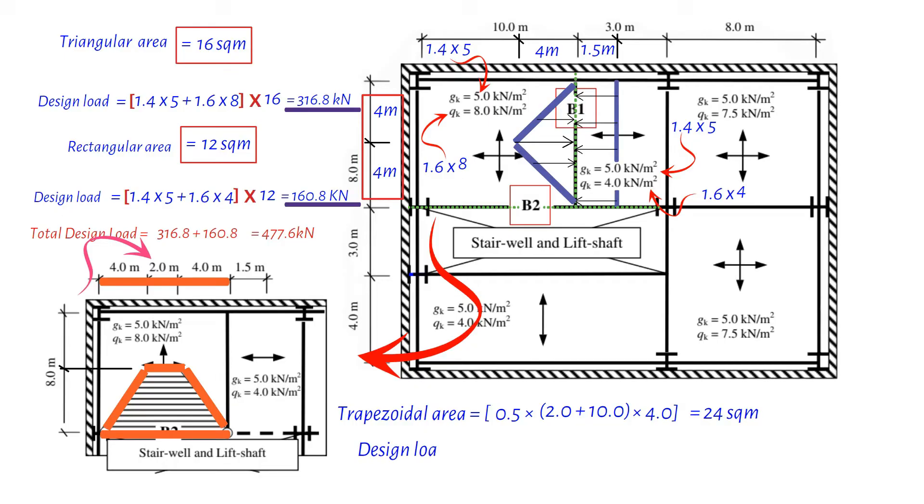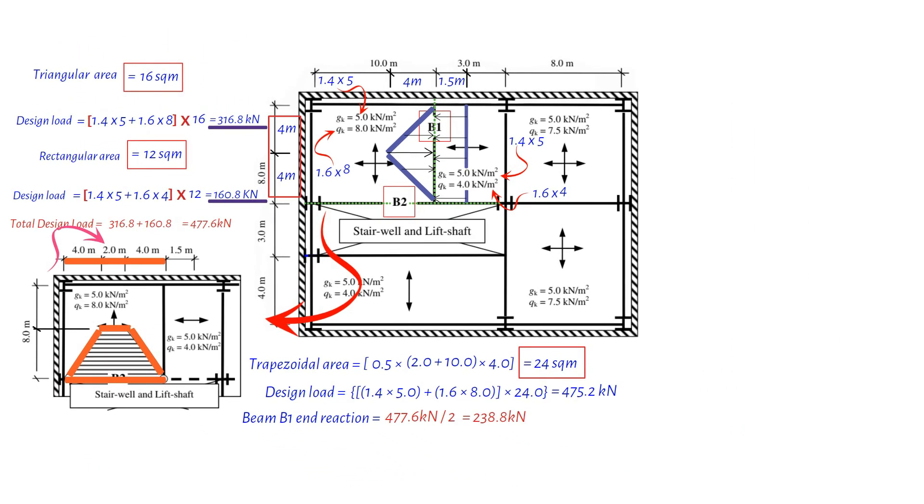Now for the weight part. Just like with beam B1, we multiply this area by 1.4 times the dead load plus 1.6 times the live load. After doing the math, we find out that beam B2 can support a weight of 475.2 kilonewton. That's quite a bit. But there's a bit more to it. Beam B2 also gets some weight from beam B1, which we call the end reaction. This adds another 238.8 kilonewton to beam B2. So it's not just carrying its own load, but helping out beam B1 as well. Talk about teamwork in the world of beams.